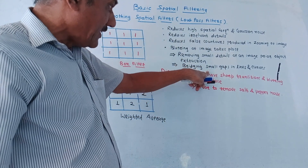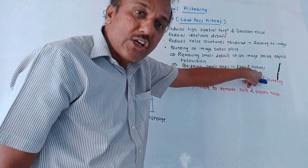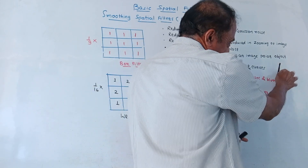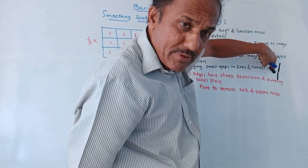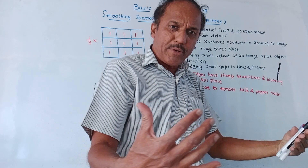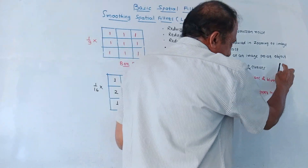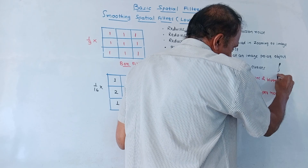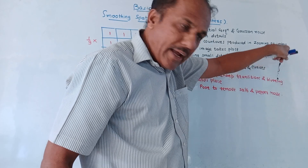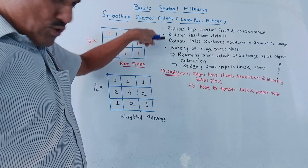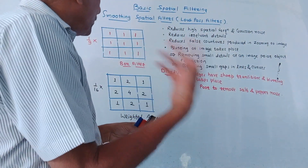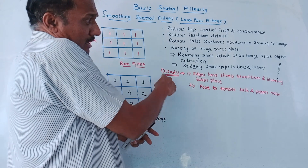A second major advantage is bridging small gaps in lines and curves. If an image has certain lines or curves with a gap created while capturing, performing the smoothing operation — applying this filter — causes blurring. Due to blurring, the image fills in those gaps. These are the uses or reasons why to use low-pass filtering or smoothing filters.